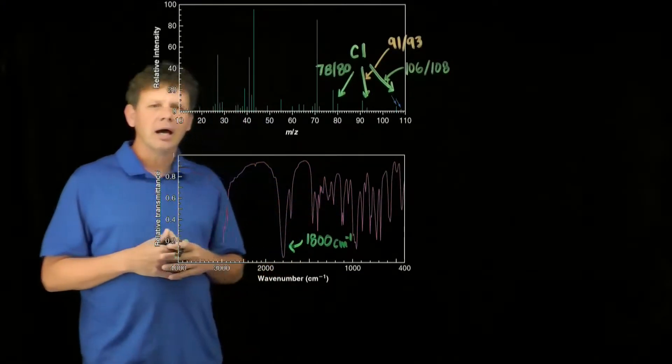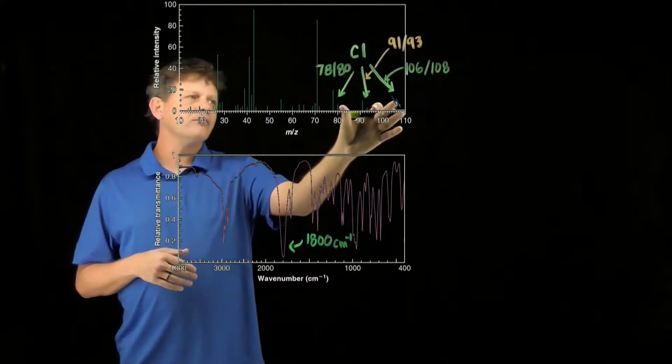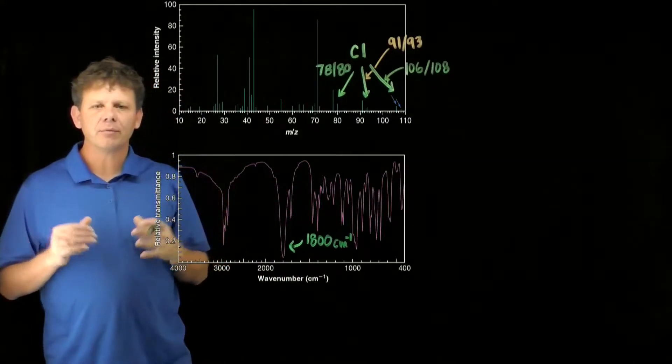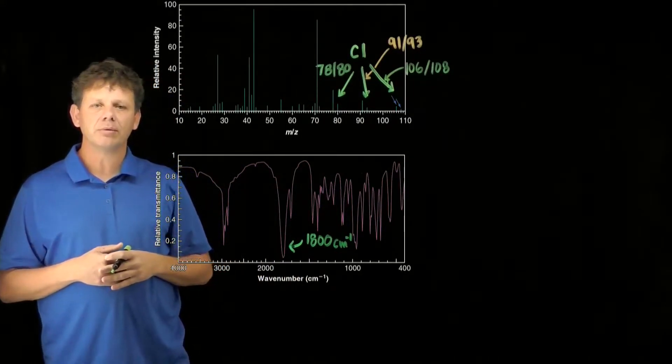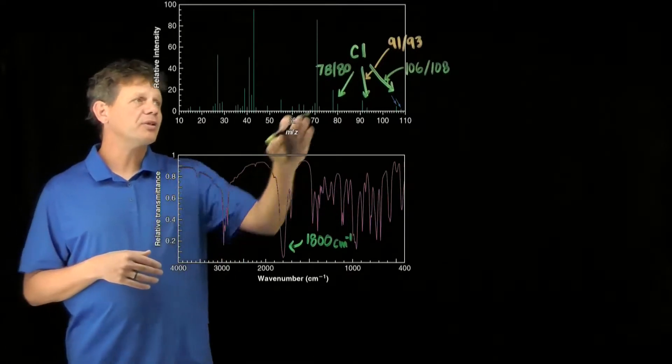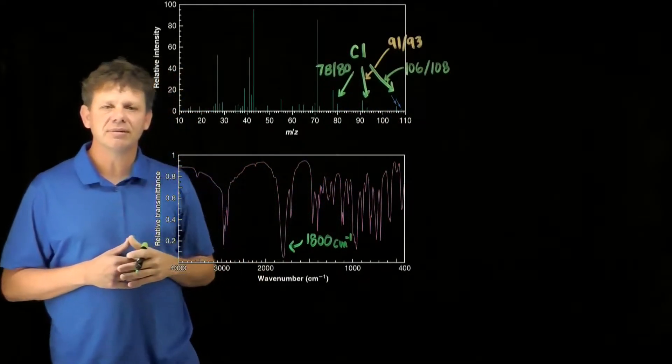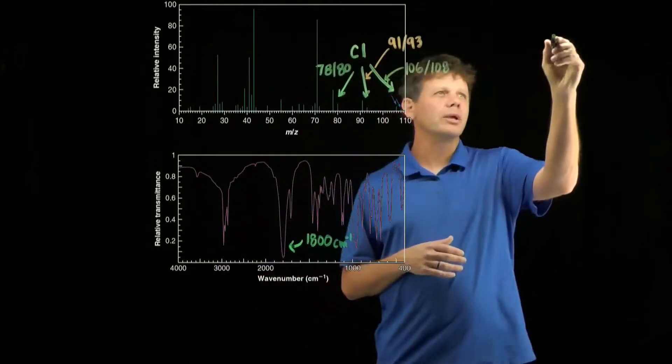Let's start with the mass spectrum. I've gone ahead and identified three important fragments at 106, 91, and 78, all three of which have an M to M+2 in a 3 to 1 ratio. What that tells us is that there's a chlorine in the molecule.